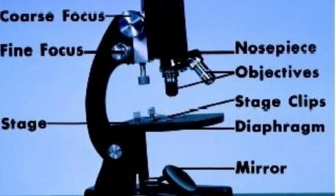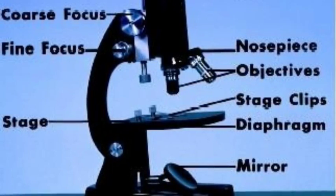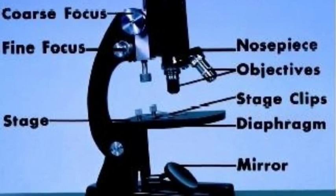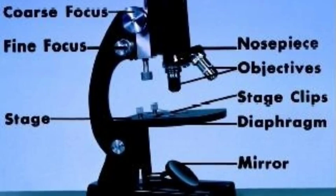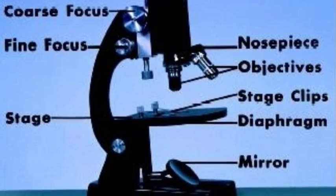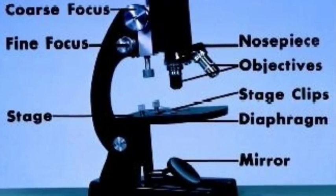The first microscope enhanced objects by 20 to 30 times. Nowadays, we've reached the magnification of 400 times. Isn't that amazing? Let's look and see how this contraption works.